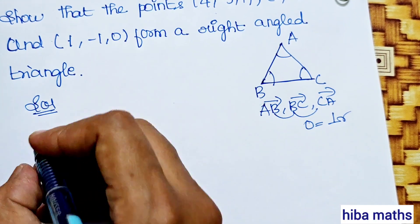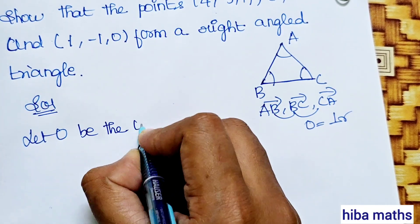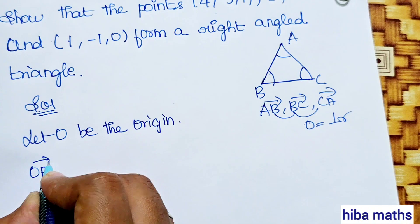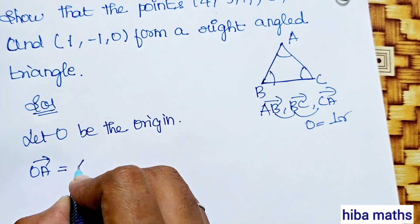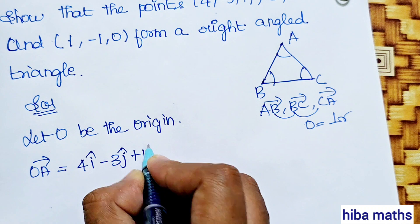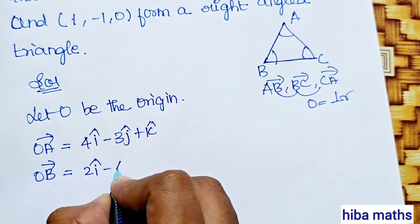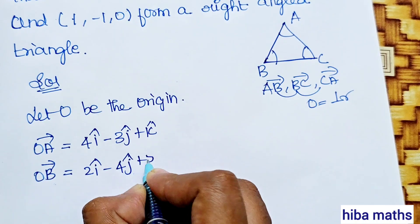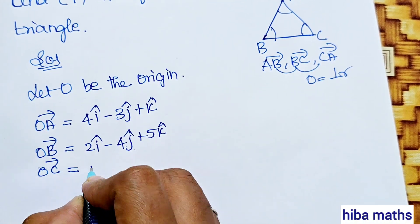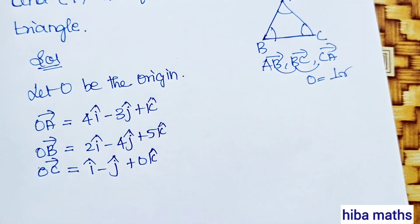Let O be the origin. The position vectors are: OA vector = 4i - 3j + k, OB vector = 2i - 4j + 5k, and OC vector = i - j + 0k.